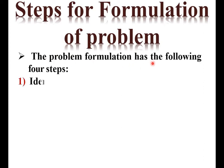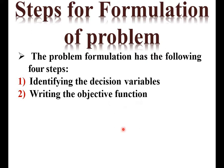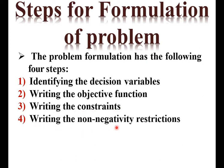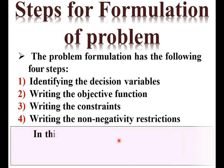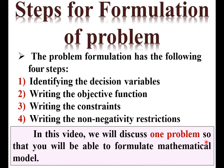The problem formulation has the following four steps: first, identifying the decision variables from the description; second, writing the objective function with its nature, that means whether it is maximize or minimize; third, writing the constraints or you can say the limitations. You need to follow these four steps in sequence to generate the mathematical model. In this video we will discuss one problem so that you will be able to formulate a mathematical model. Let us start from the description.